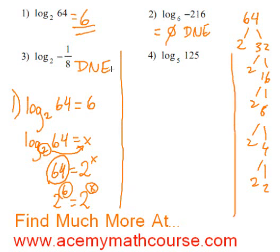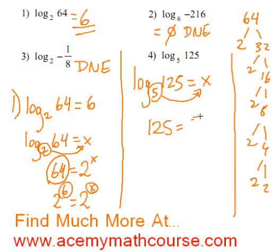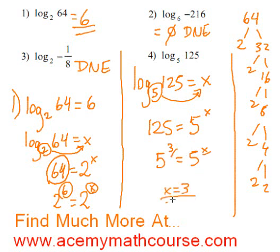How about this one: log base 5 of 125? Let's make that equal to x again. Kick the 5 over — 125 equals 5 to the power of x. If we make a factor tree, we'll realize that 125 is 5 cubed. So 5 cubed equals 5 to the x, which means x is 3. Voila, that's it!